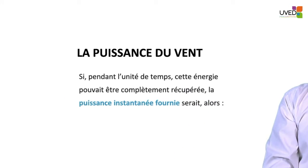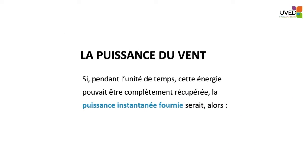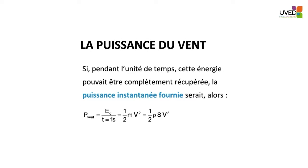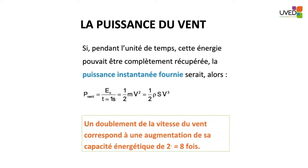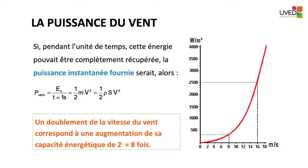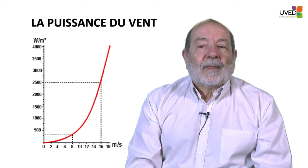If in one second this lorry hits a wall, it develops a power equal to energy divided by time. Wind power equals half of MV². Since mass equals rho times the section multiplied by the thickness of the disk, hence velocity, multiplied by V², we end up with the relationship: P = ½ρSV³.